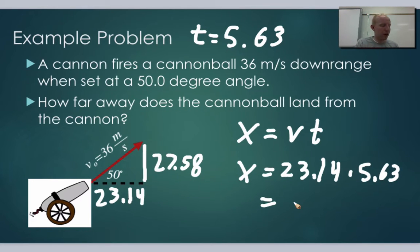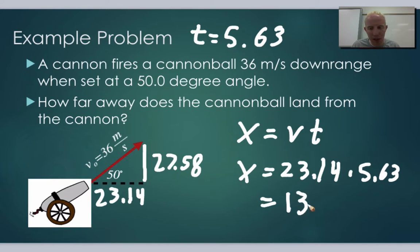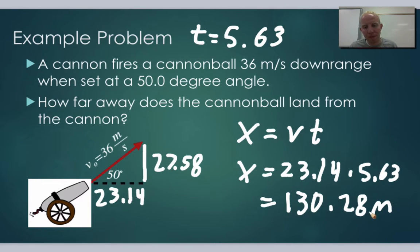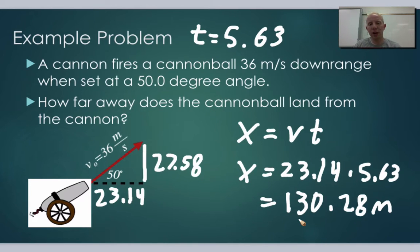So x equals 23.14 times 5.63 — multiply that out and you get a total distance of 130.28 meters. That cannonball is in the air for 5.63 seconds and travels 130 meters downrange. That's how we solve these types of problems, and that's generally the form you'll see them in.